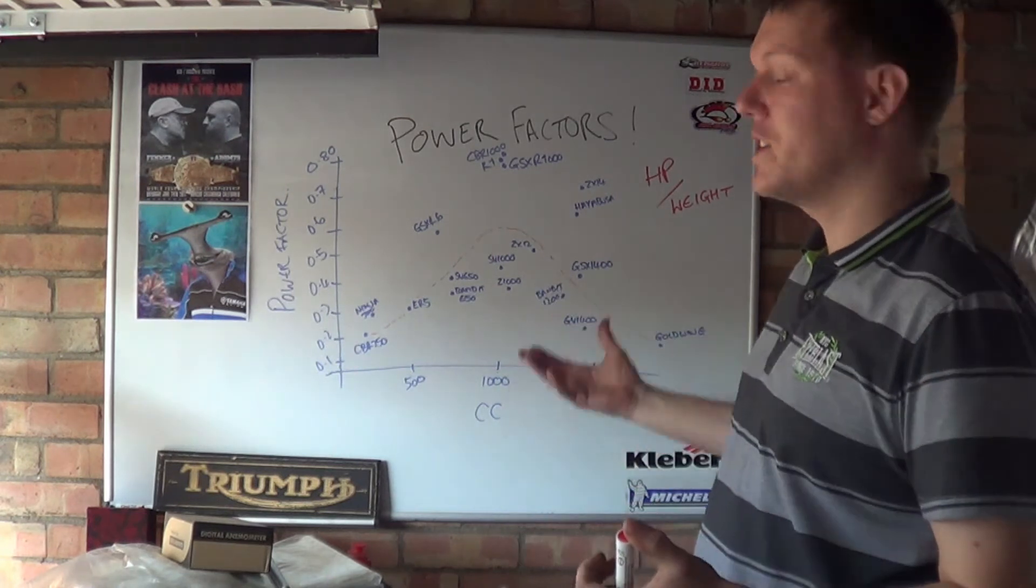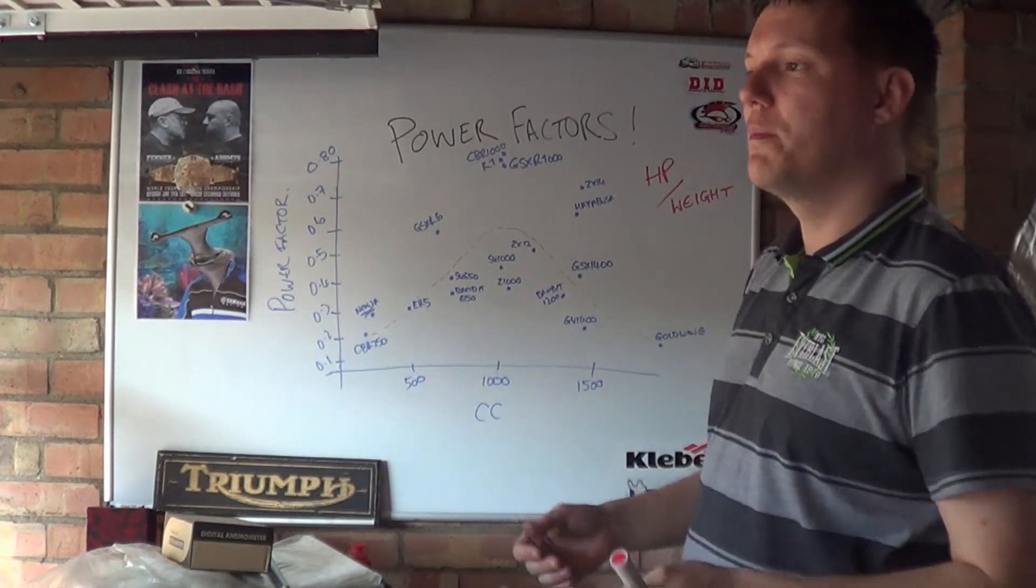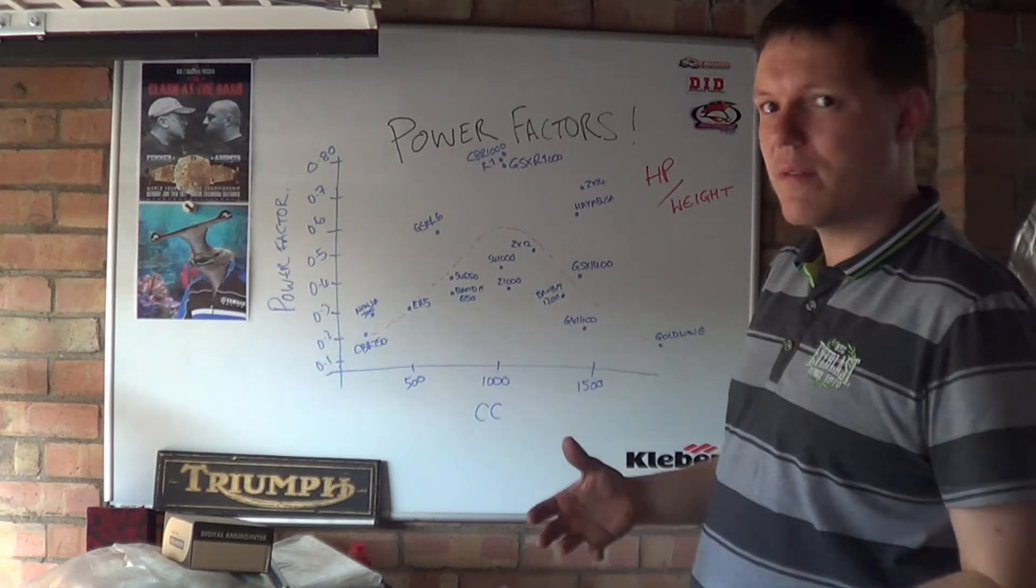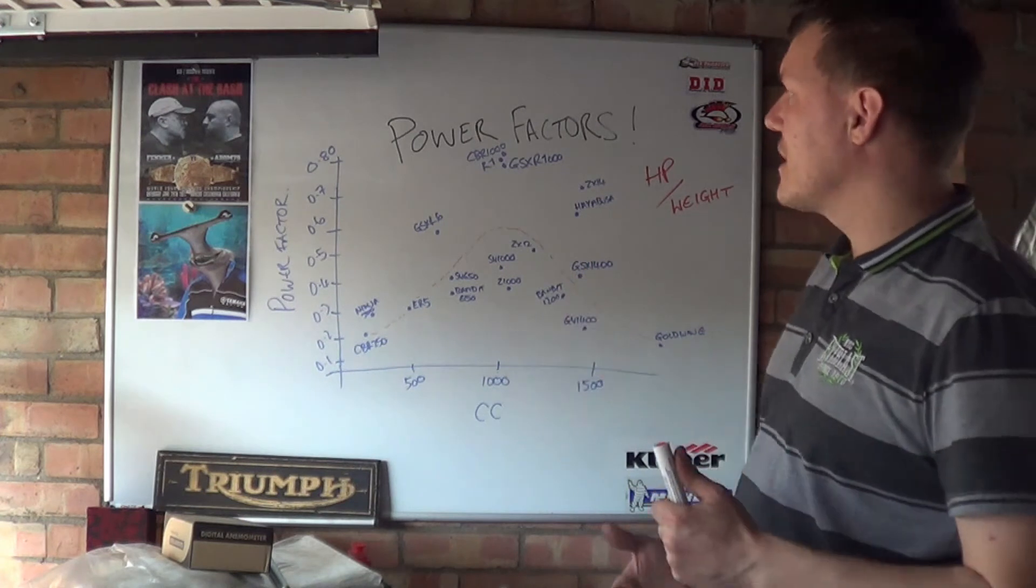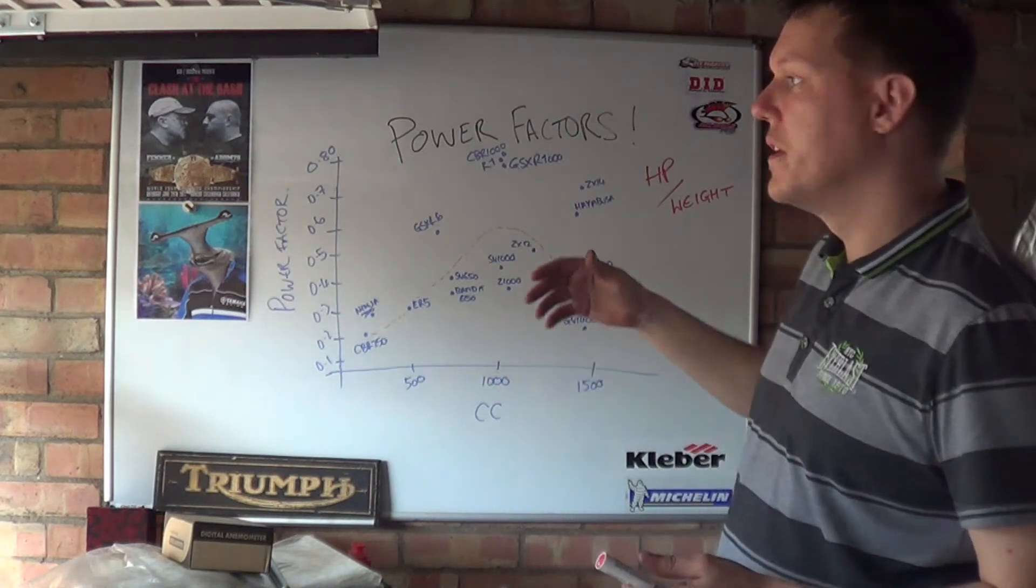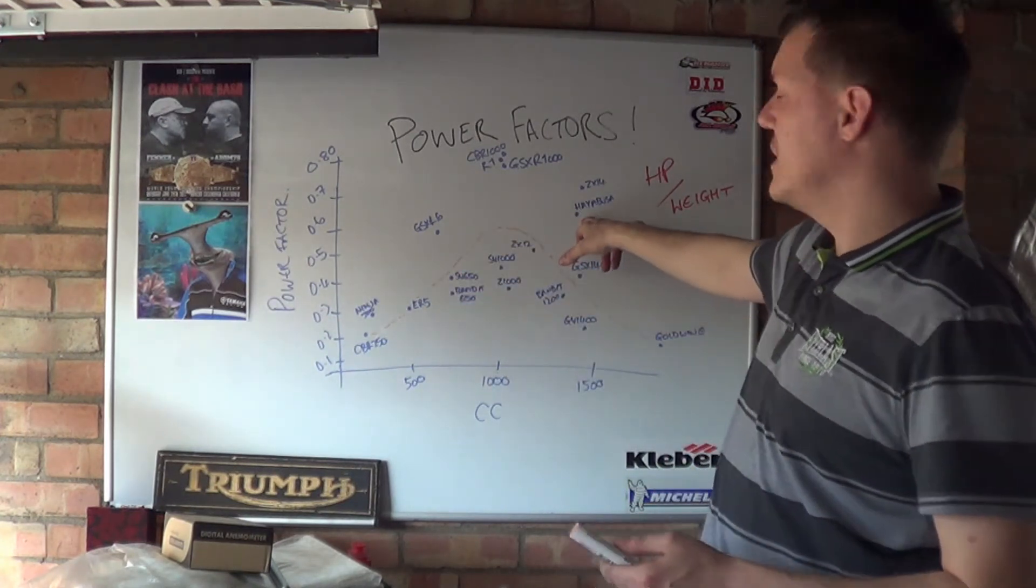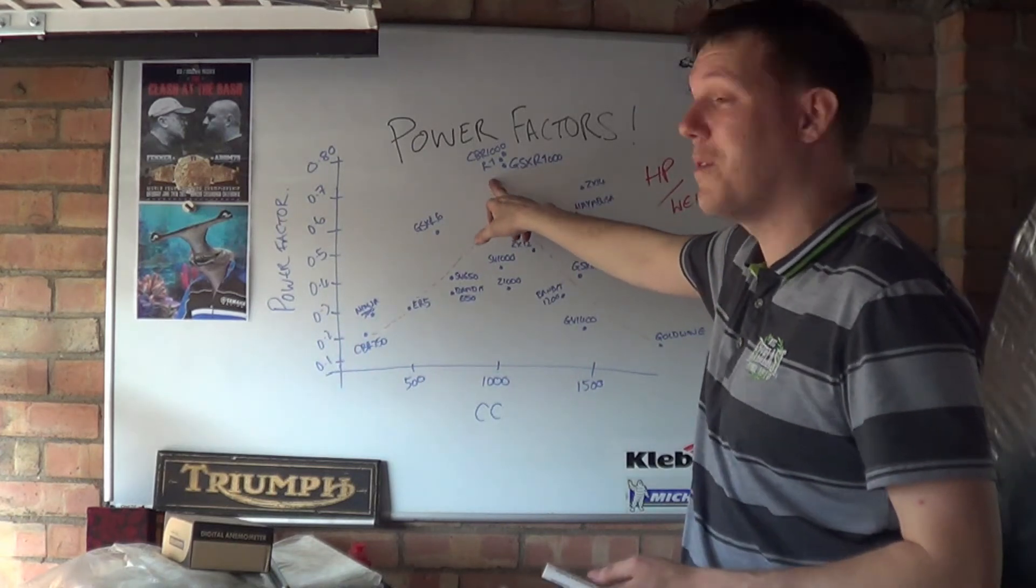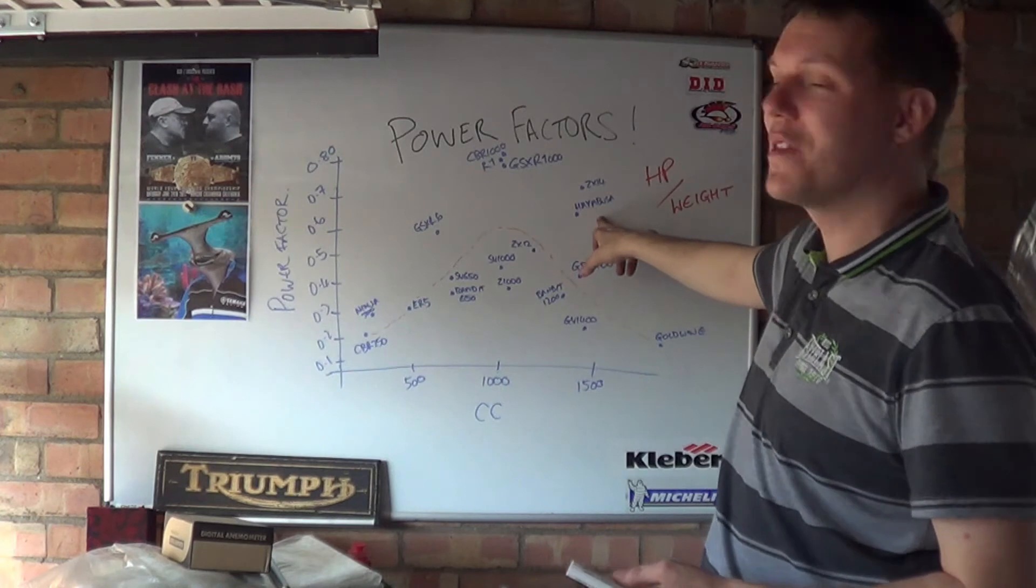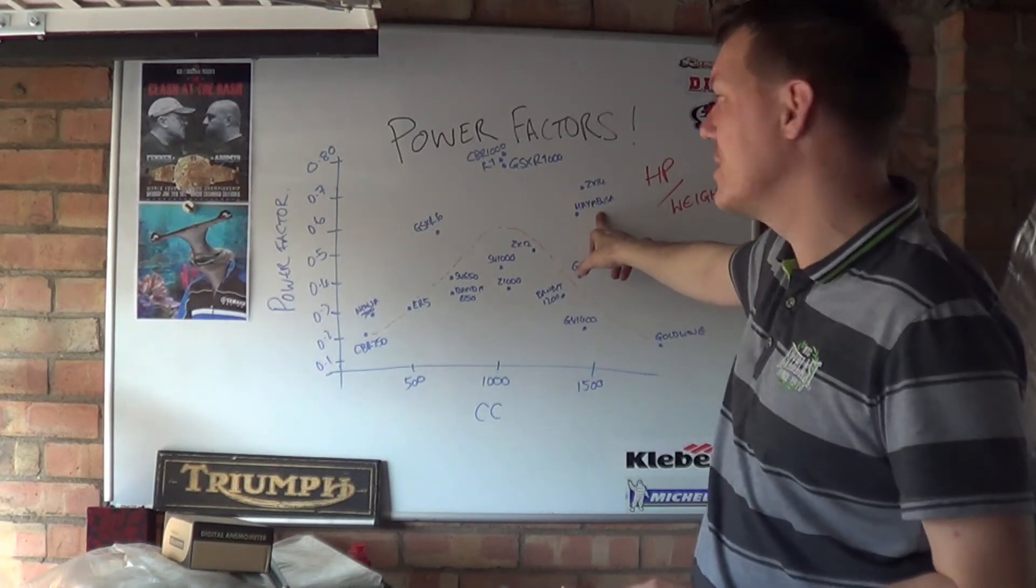But then it begs the question again, why then are MotoGP and why are Superbikes 1000 CC? And when you go to bigger CCs, your power factor actually drops. And you might think, yes, but these go a lot faster, but these have the highest acceleration, and to be quite honest, aren't that much slower than the 1400s and the 1300s.